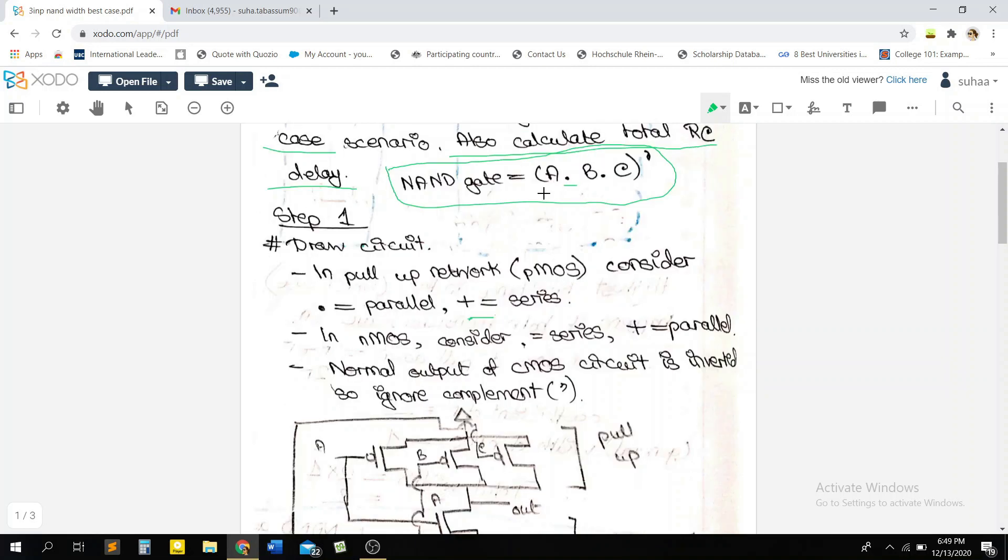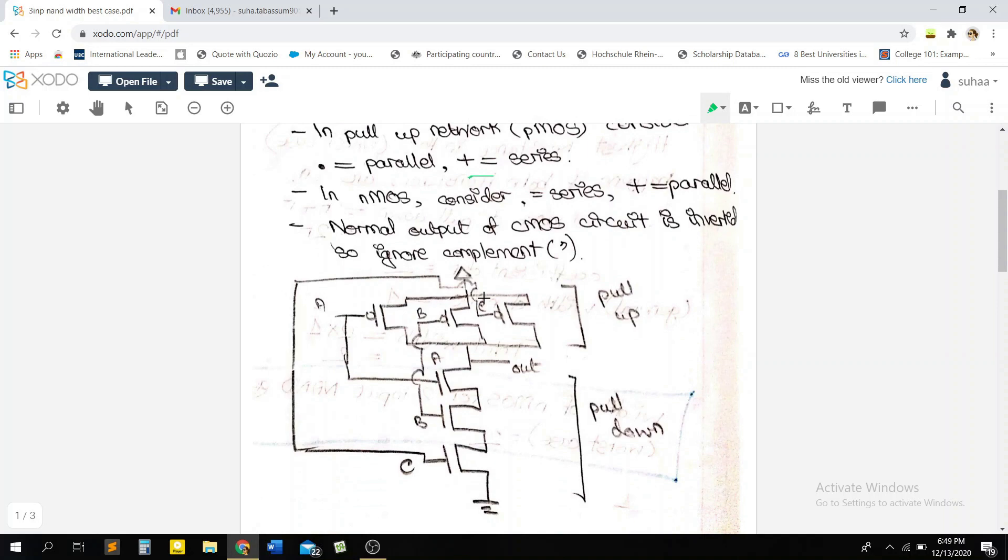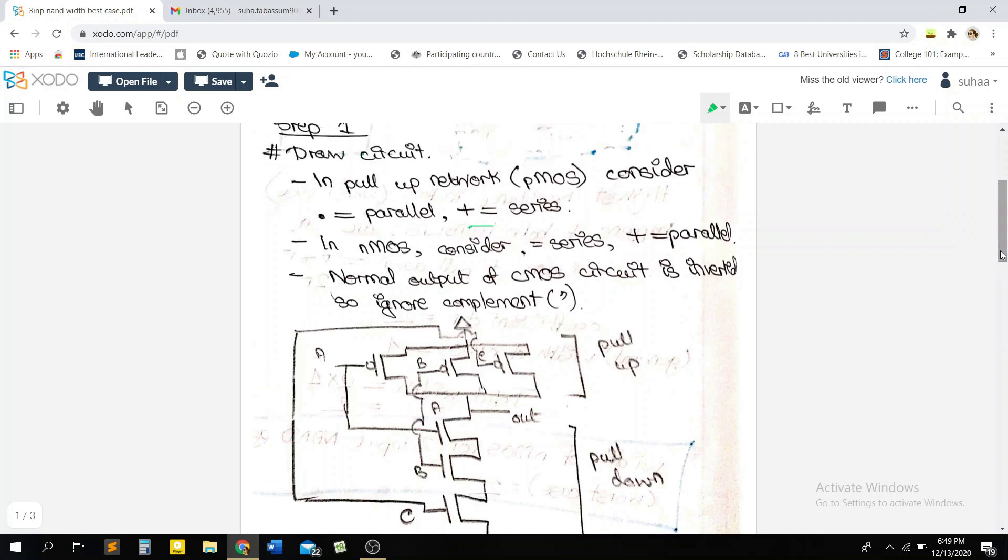So since we have a dot in our Boolean expression, A, B and C are connected in parallel in the pull up network, the PMOSs. And remember that the NMOS is going to be the exact reverse. So for the dot, they are connected in series in the pull down section for the NMOS.